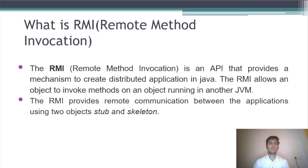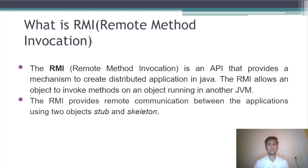So what is RMI? RMI stands for Remote Method Invocation. The RMI is an API that provides a mechanism to create distributed applications in Java. The RMI allows an object to invoke methods on an object running in another JVM. The RMI provides remote communication between applications using two objects: Stub and Skeleton. Basically, RMI is used to invoke a method that is running on another JVM, that is Java Virtual Machine.